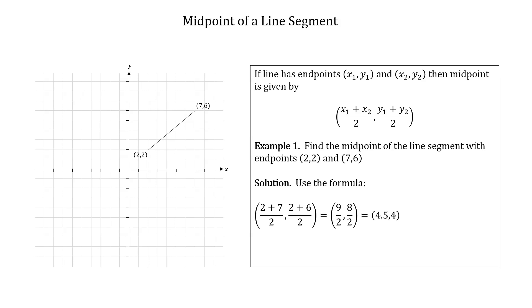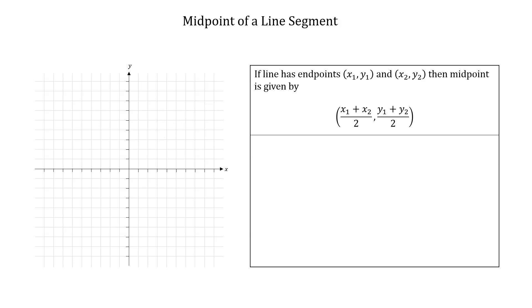Drawing this onto the diagram, we find x coordinate 4.5 and y coordinate 4. Where the two dotted lines meet on the black line is the midpoint (4.5, 4), and indeed when you look at the diagram this point does appear to be halfway along the line.